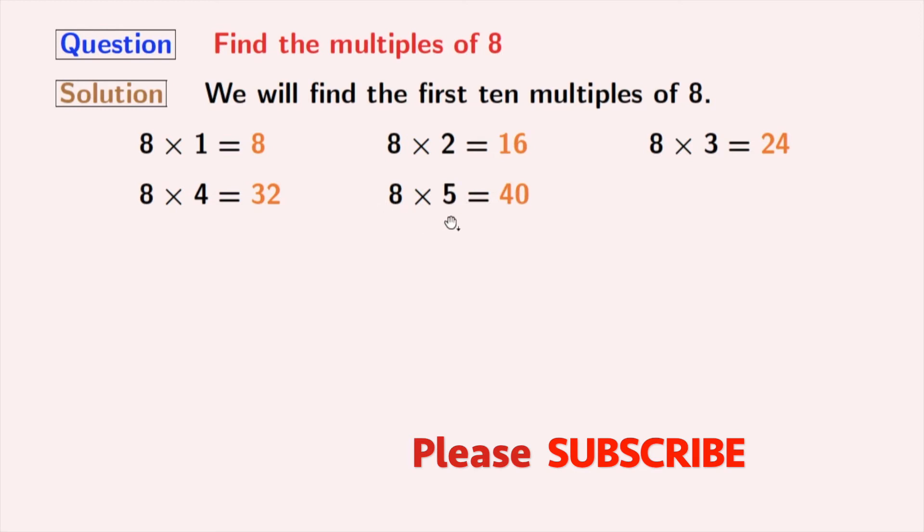Multiplication of 8 and 5 gives 40. Multiplication of 8 and 6 gives 48. 8 times 7 is 56. 8 times 8 is 64.